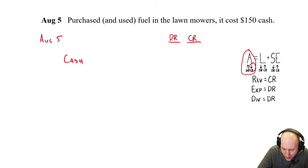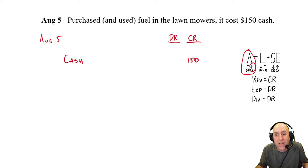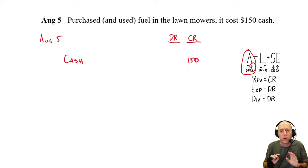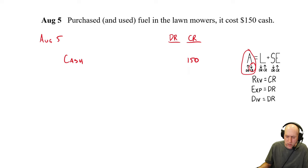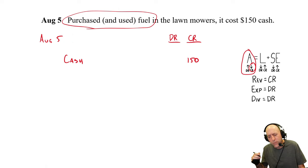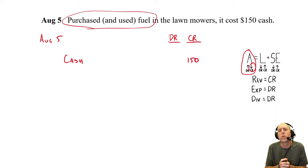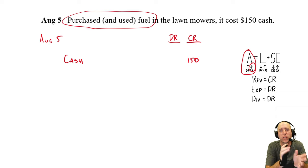August 9th: did social media advertising, paid $200. Cash is an asset and it is decreasing, so credit cash $200. Advertising is a cost of running a business, so we debit advertising expense for $200. August 10th: completed a sod installation job, billed $2,000, payment due in 30 days. We did work but did not get paid — cash did not change hands. Work done for which I am not paid creates accounts receivable. AR is increasing, so debit accounts receivable for $2,000.